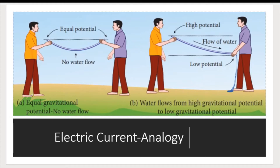When both ends are at equal gravitational potential, there will not be any water flow. But if one end is at lower potential, water will flow. So whenever there is a potential difference, water flows from higher gravitational potential to lower. We can apply the same concept to electric current.